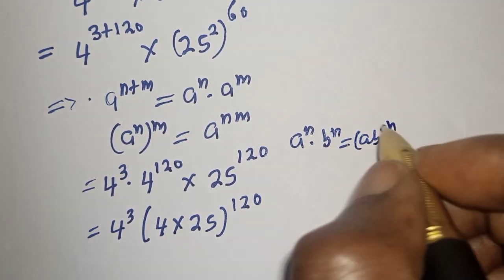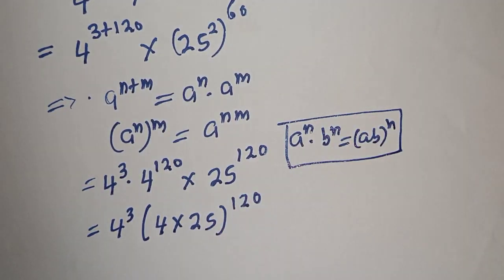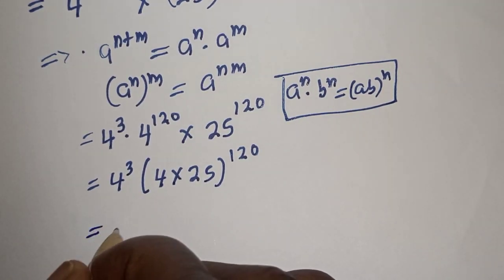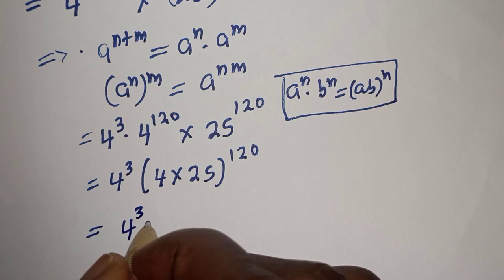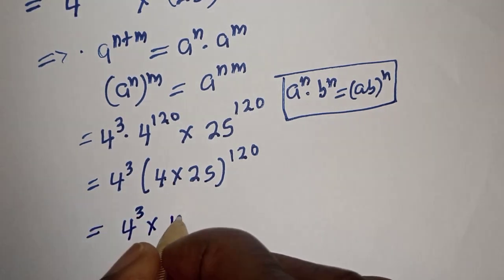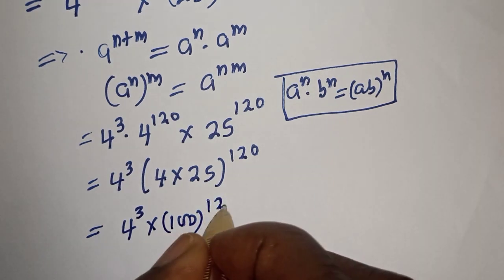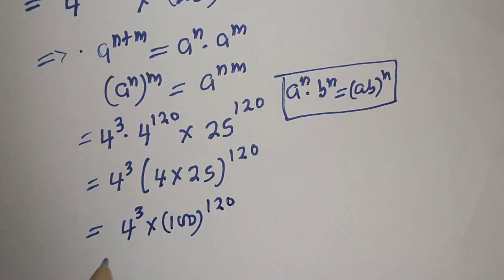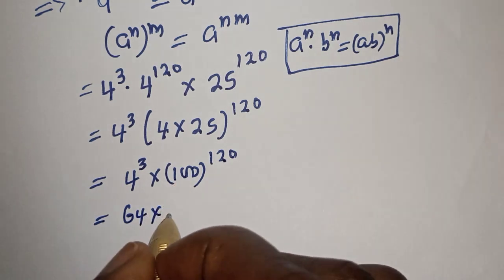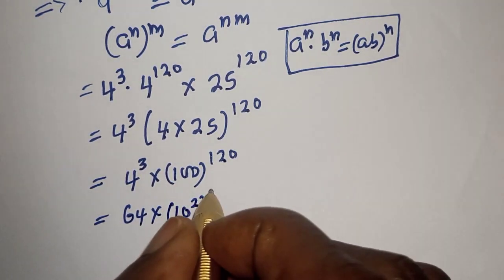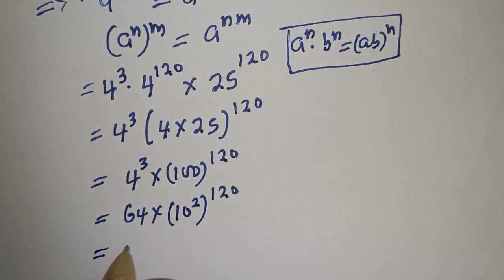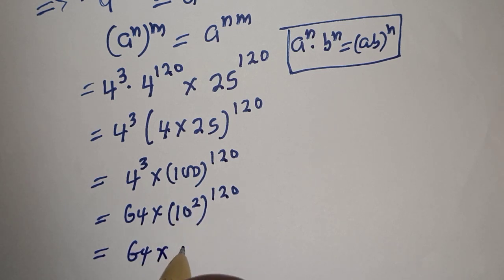This gives us 4 raised to power 3, multiplied by 25 times 4 — that is 100 — raised to the power of 120. Now, 4 raised to power 3 is 64, and 100 equals 10 squared. So we have 64 multiplied by 10 squared raised to power 120, which equals 64 multiplied by 10 raised to power 240.